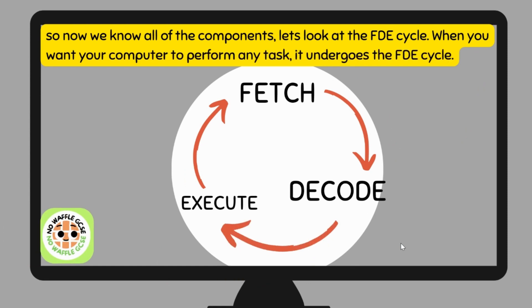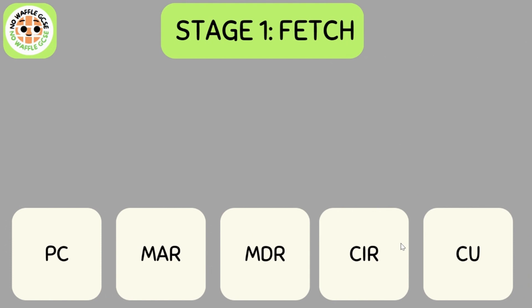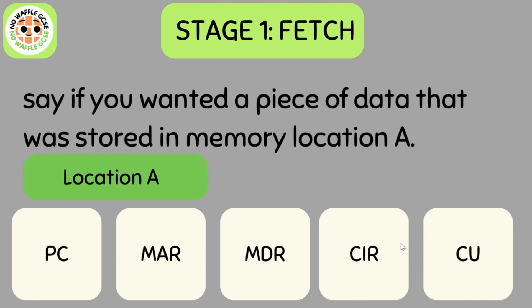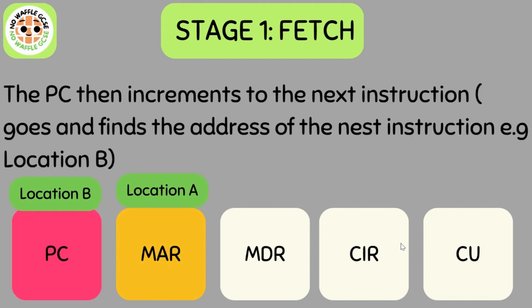Now that we know all about the components, let's look at the FDE cycle. When you want your computer to perform any task, it has to undergo this cycle. The FDE cycle is part of the Von Neumann architecture. The first stage is the Fetch stage. Say if you wanted a piece of data stored in memory location A, the PC sends the address of the next instruction to the MAR.